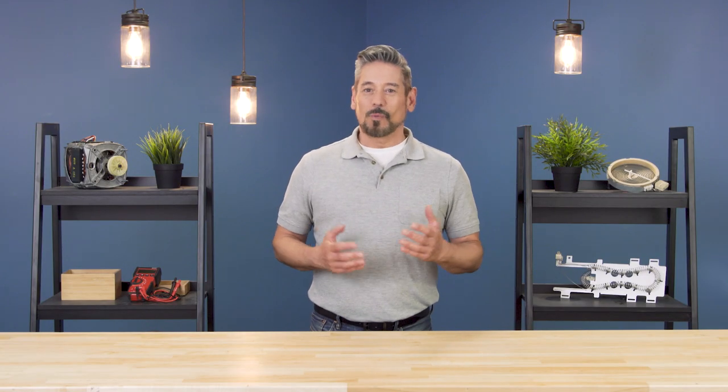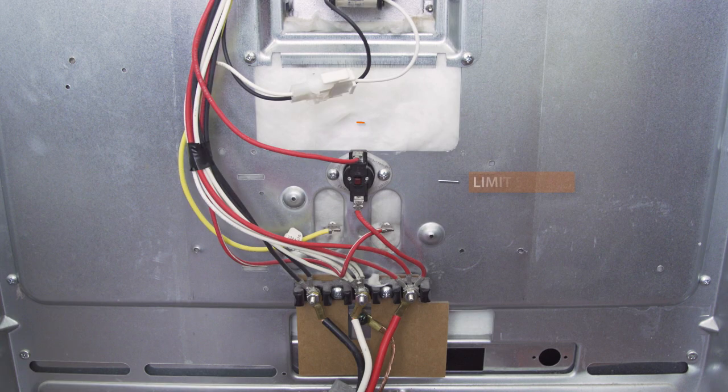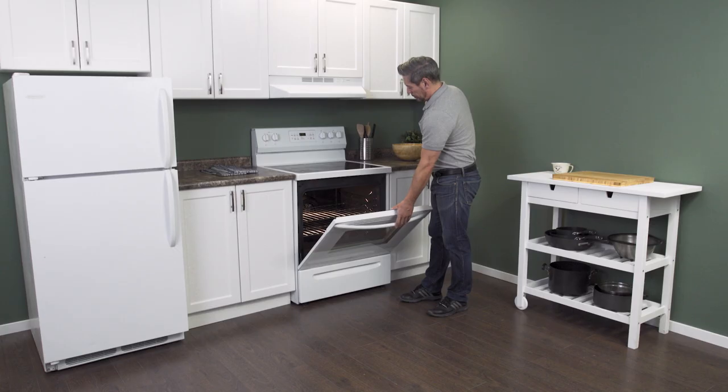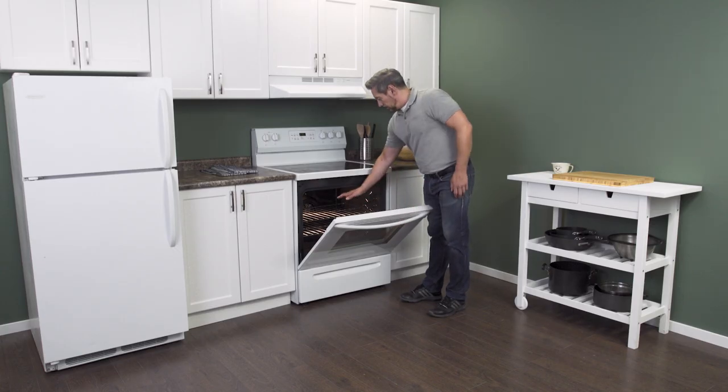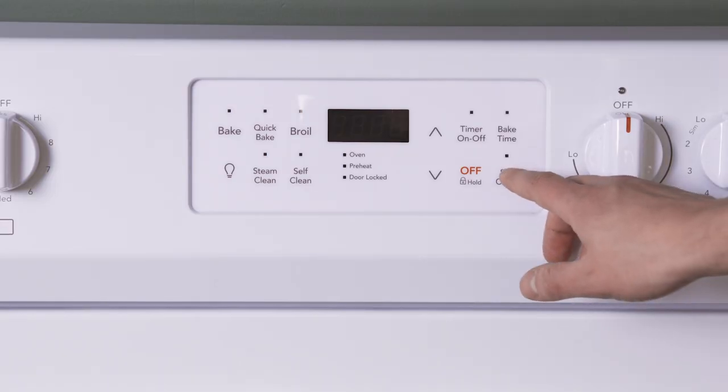Hi I'm Vance and welcome to Repair and Replace. Some ovens will use a high limit switch or thermostat to protect against overheating. If your oven isn't heating properly or if the display isn't working, then it's possible that the limit switch is faulty.